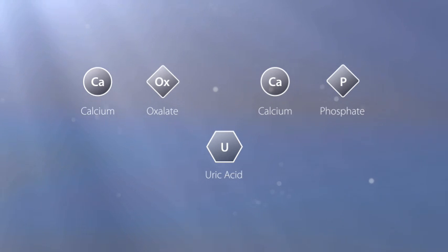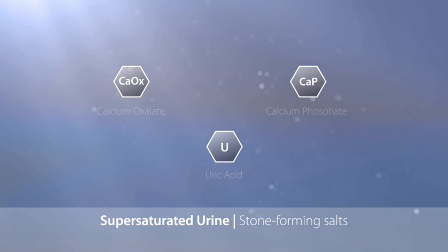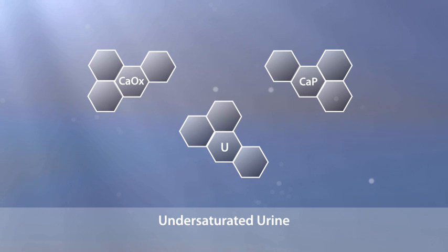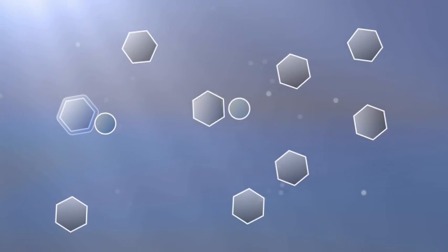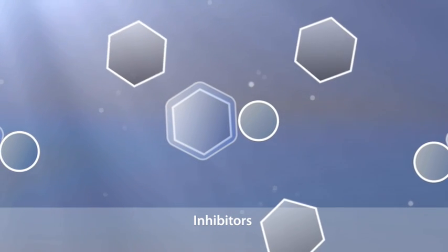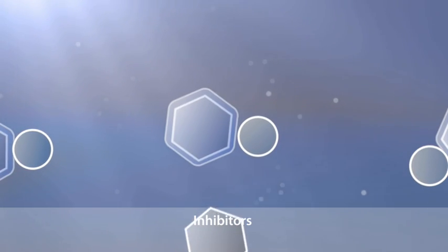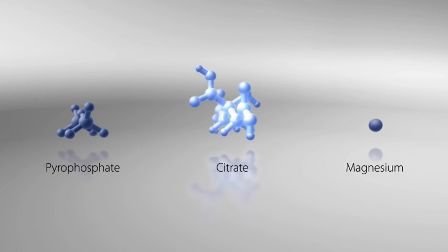But what actually causes crystals to form? Why do some crystals develop into kidney stones, and others do not? One critical factor is supersaturation of the urine with stone-forming salts — supersaturation is the driving force for crystallization. In under-saturated urine, crystals cannot form. The other important factor is a deficiency in substances called inhibitors. Inhibitors retard the nucleation, growth, and aggregation process by binding ions needed for crystal formation and growth. One of the most important inhibitors is citrate.